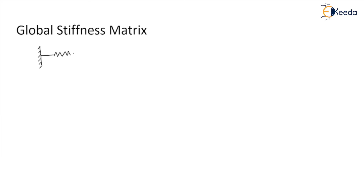We take a simple example to understand this better. Instead of one element, this system has two elements. The first element has property k1 and the second has property k2, and there are three nodes instead of two: node number one, node number two, and node number three. The system is under a tensile load so it will get elongated, and we want to find the solution.